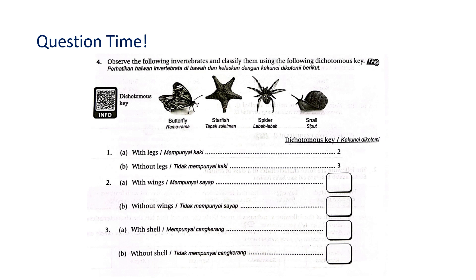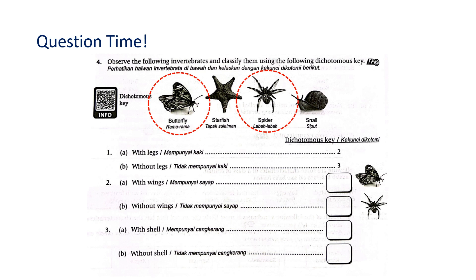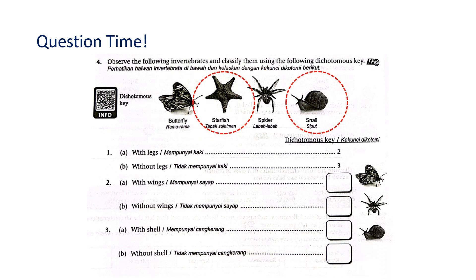Let's do question 2A — with wings. First, identify the animals that have legs: butterfly and spider have legs. For 2A with wings, the answer is butterfly, because only butterfly has wings. So 2B without wings is spider. Your answers for 2A and 2B should be only butterfly or spider — not starfish or snail, because starfish and snail do not have legs. For question 3A with shell, out of starfish and snail, only snail has a shell, so the answer is snail. For 3B without shell, the answer is starfish. You just need to know how to read the dichotomous key — once you can, you can easily answer the questions.